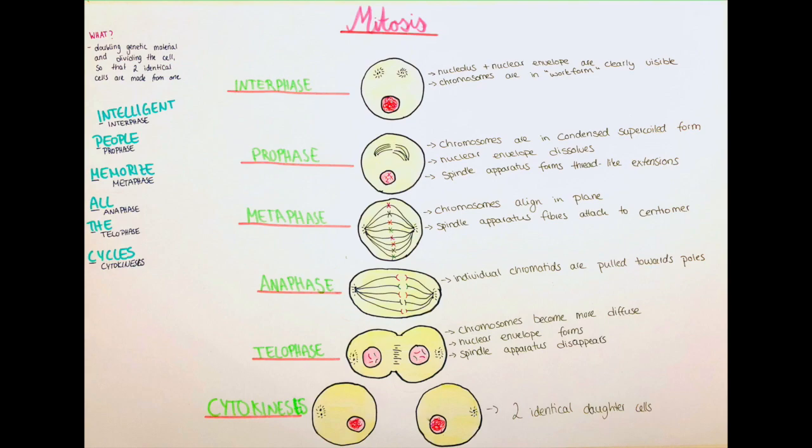To wrap it all up again so we have the spindle apparatus which forms which pulls the chromatids apart and then the cytoplasm which folds in and separates the now two cells from each other.